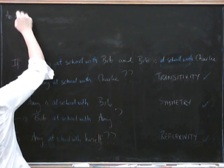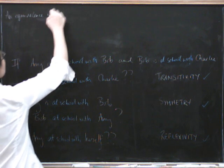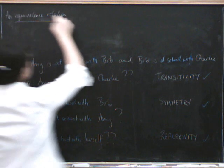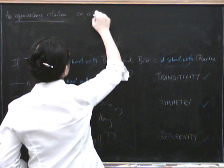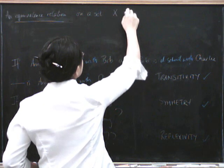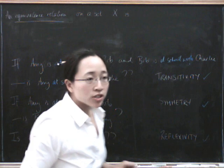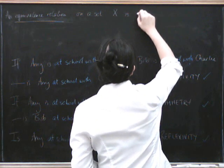An equivalence relation on a set of things - let's call it on a set X - is a binary relation, which means that it's a relationship between pairs of things.